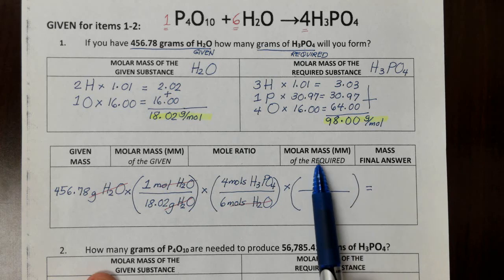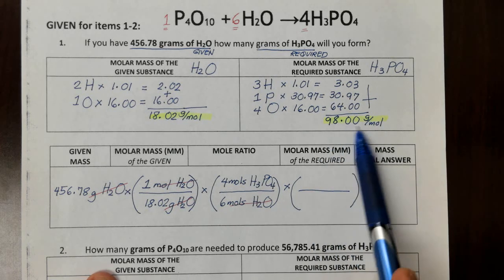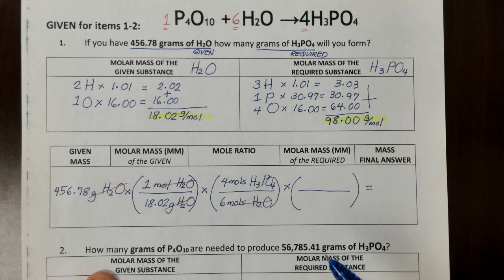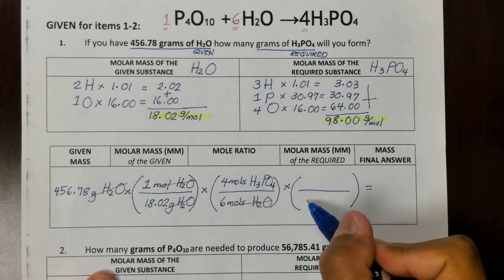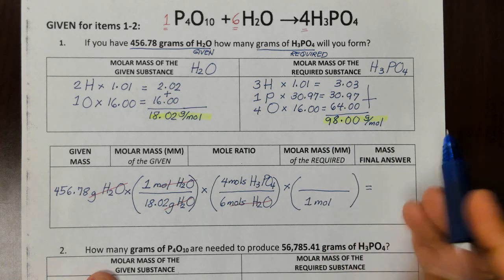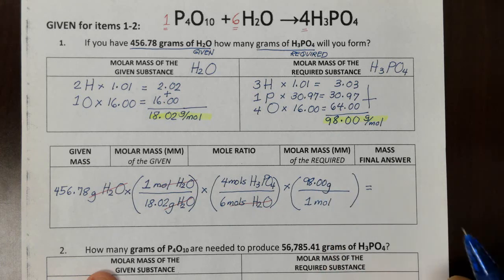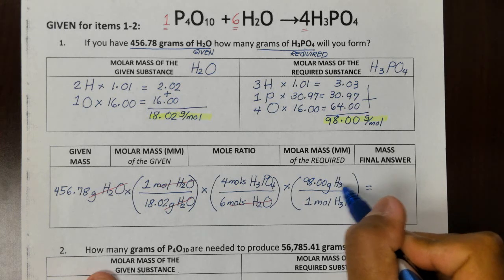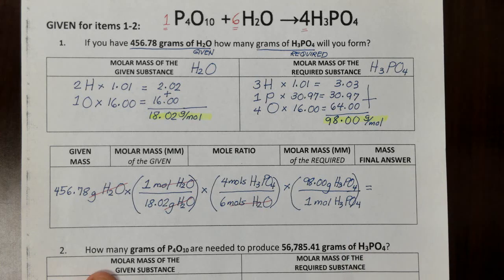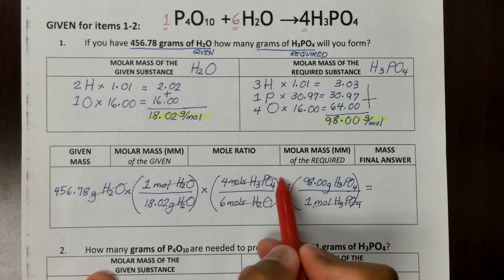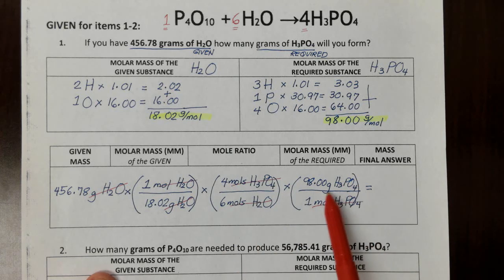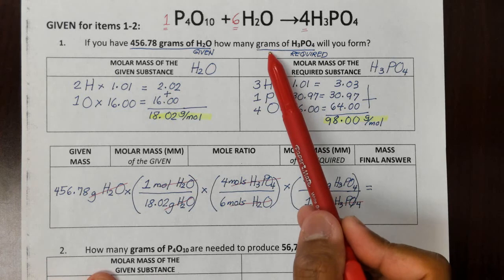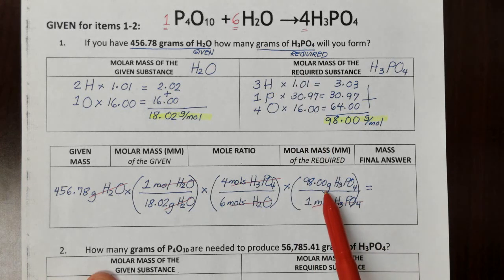Finally, we apply the molar mass of the required substance. We use 98.00 for H3PO4. To cancel the remaining mole H3PO4, we put 1 mole H3PO4 in the denominator and 98 grams H3PO4 in the numerator. Mole H3PO4 cancels, leaving us with grams H3PO4 — which matches exactly what the problem asks for.